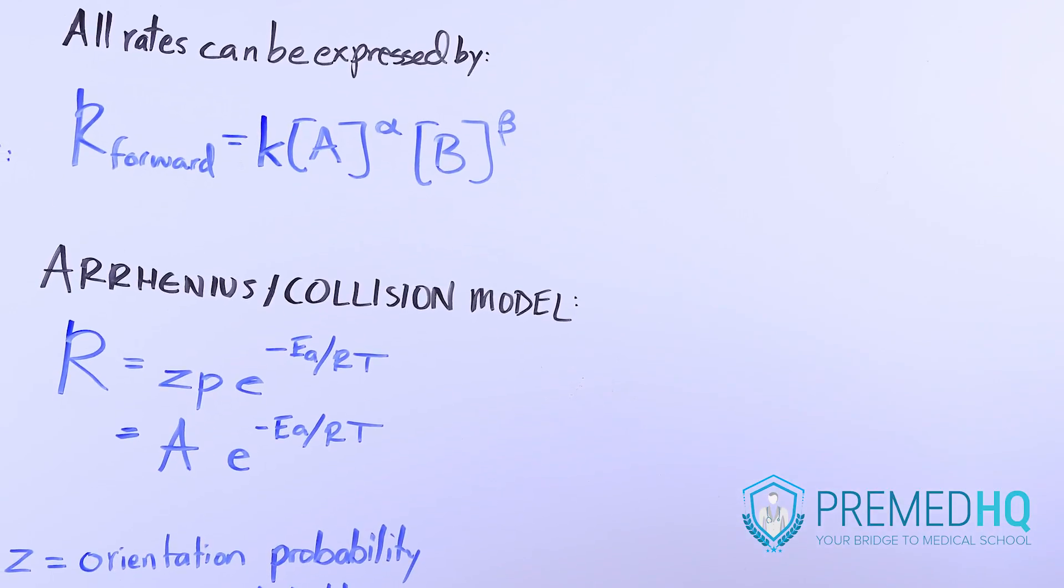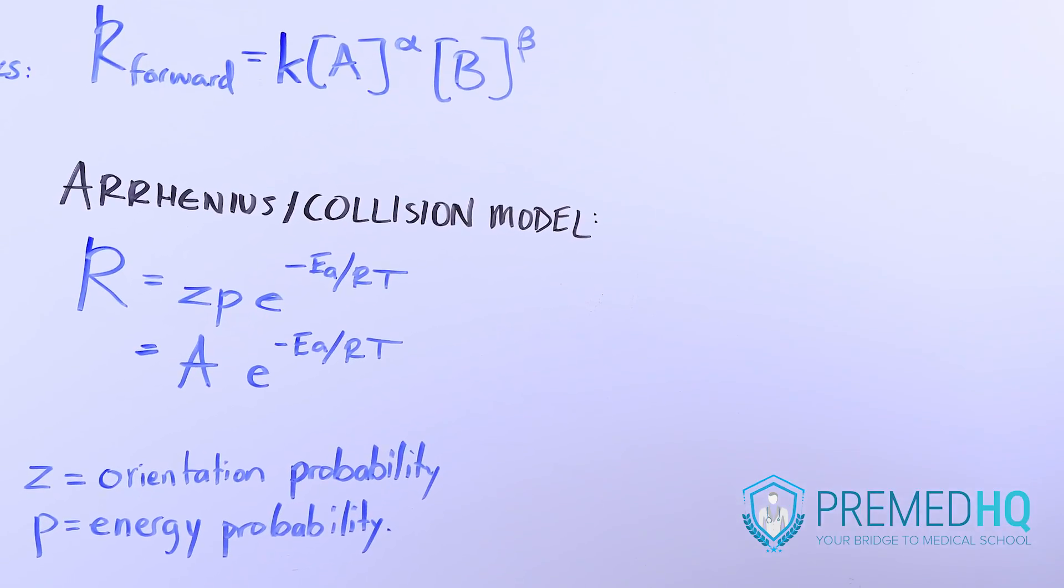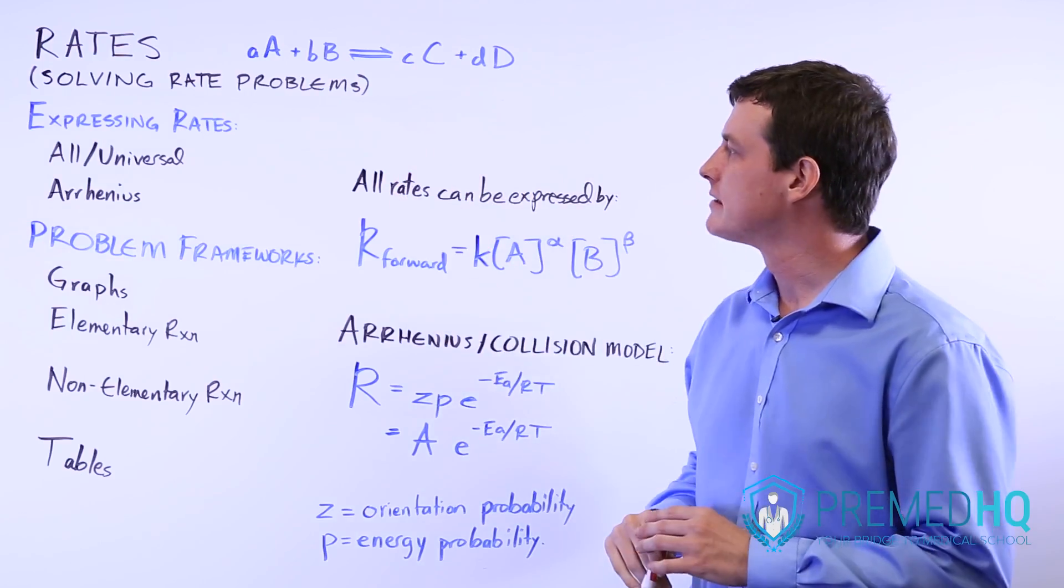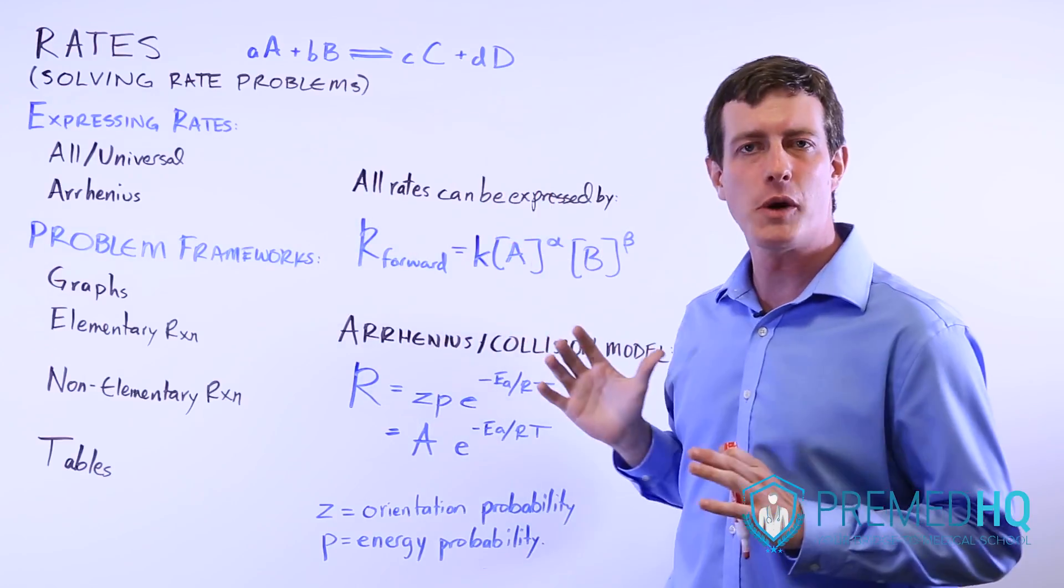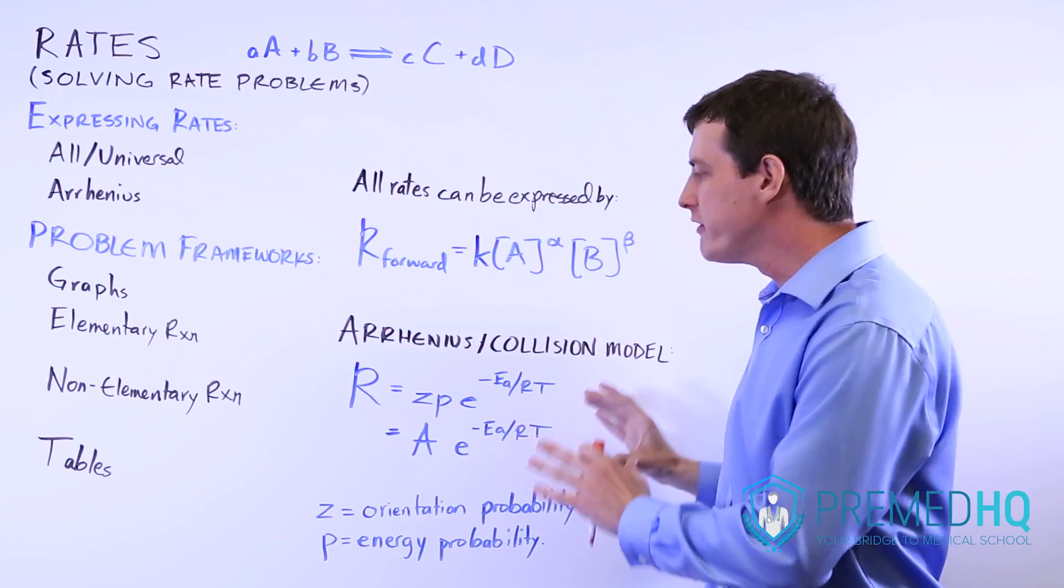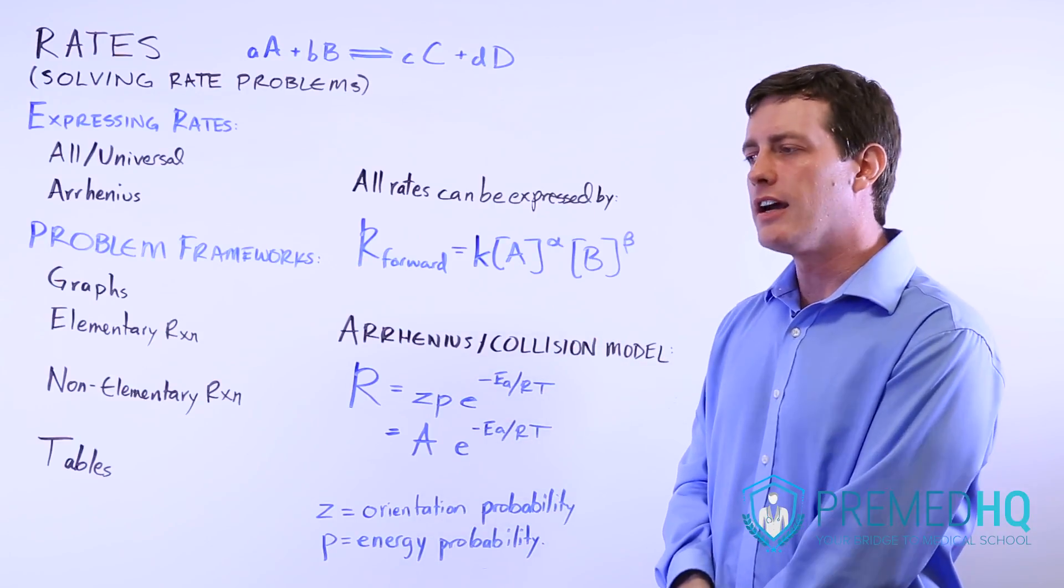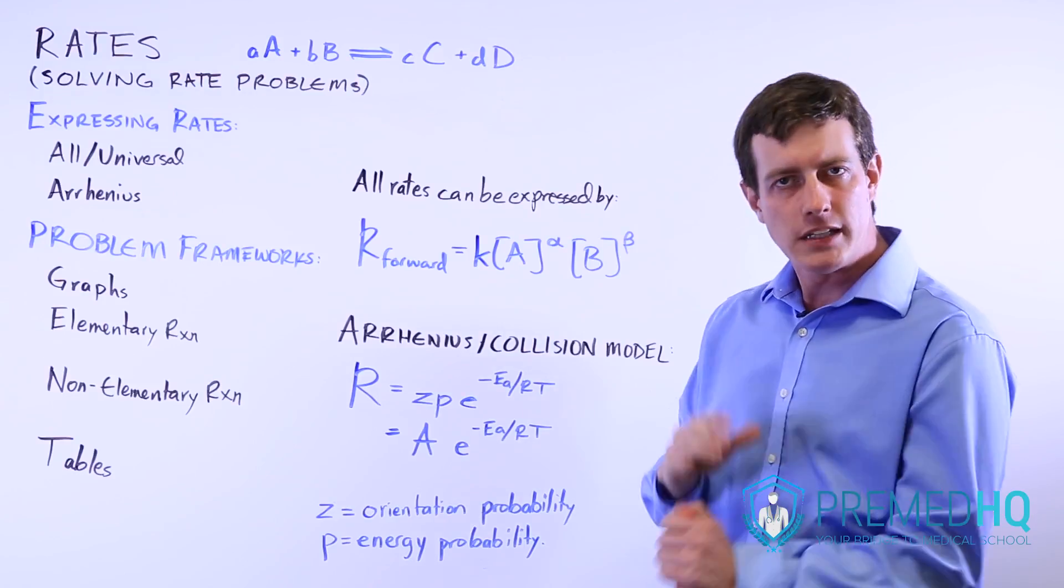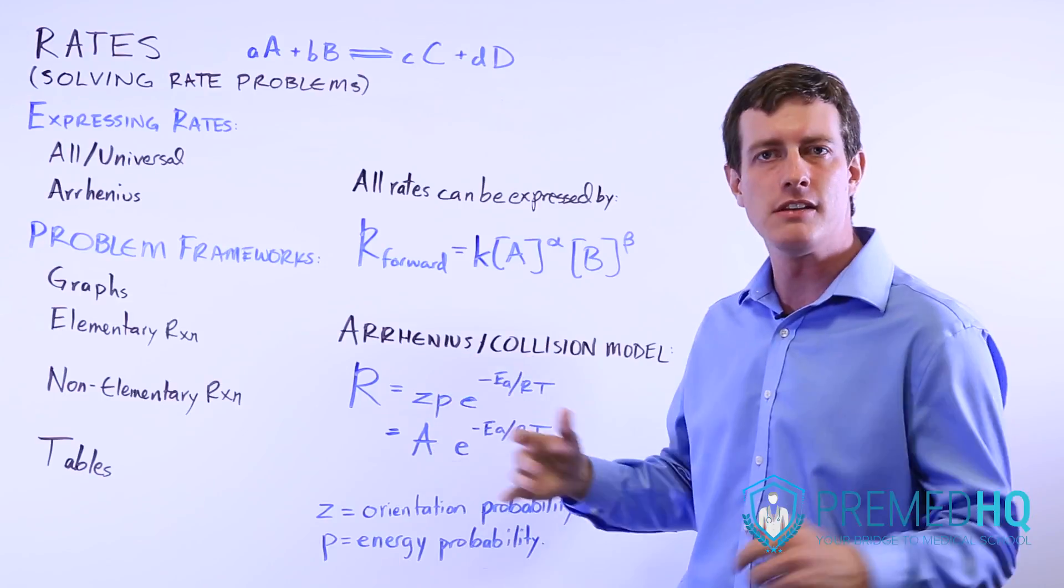The first two components of this double agent rate model are the two ways of expressing rates. You have the universal equation and the Arrhenius model, which is another very valid way you might see rates expressed and can be useful in understanding why rates change as you start changing components of the environment.